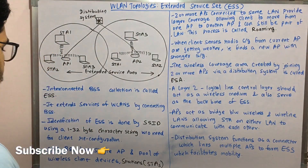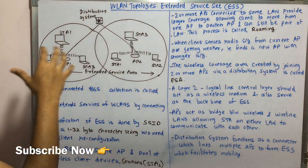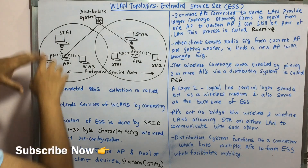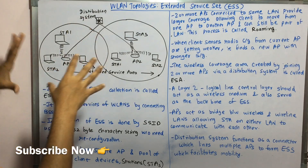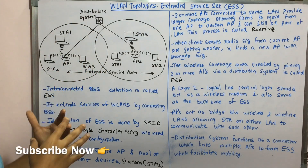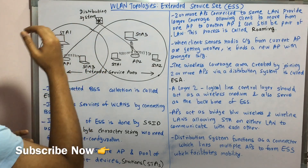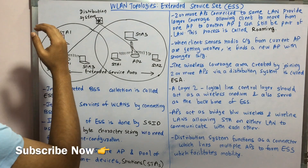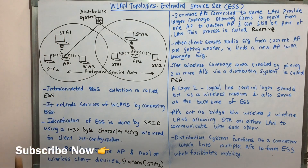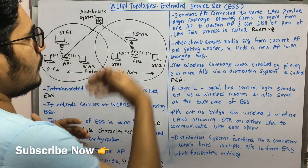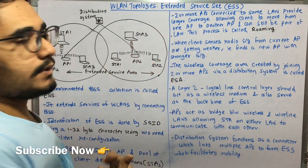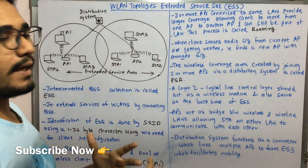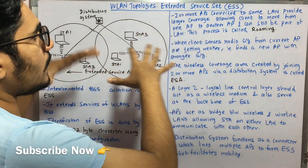Each BSS has a single AP and a pool of different wireless client devices called STAs — that is, mobile stations. STA stands for station. By connecting two or more APs which are connected to the same LAN, the ESS provides a larger coverage area.